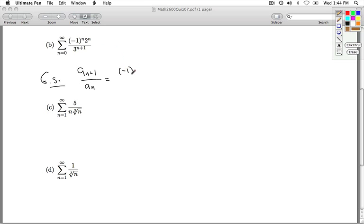And we can prove that by taking A sub n plus 1 divided by A sub n. So replace n with n plus 1, and multiply that by the reciprocal of A sub n. When you simplify, you get negative 1 in the numerator, 2 in the numerator, you get negative 2 in the numerator, and then the denominator, you get a 3.